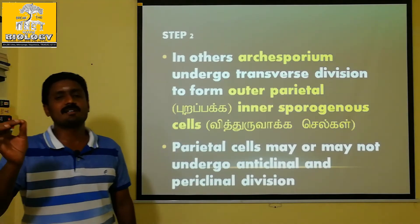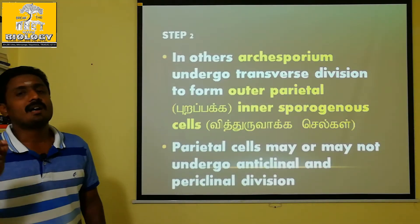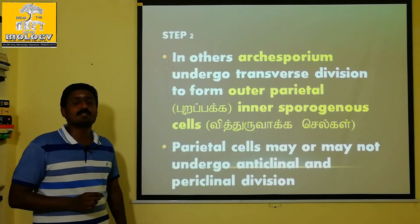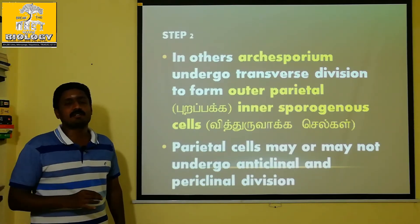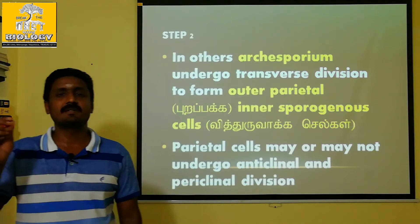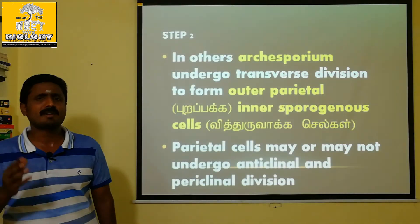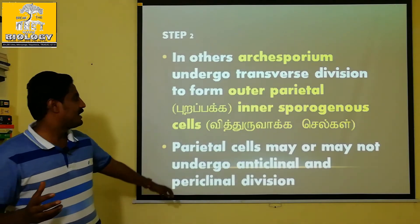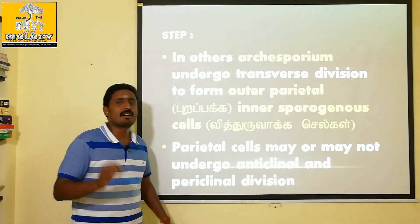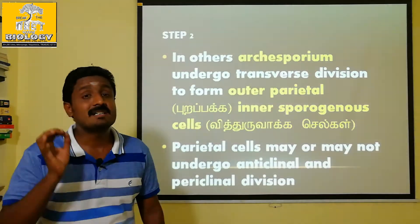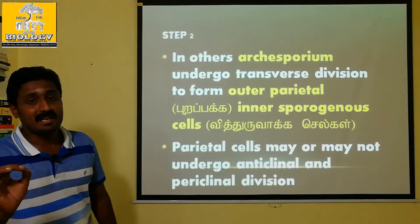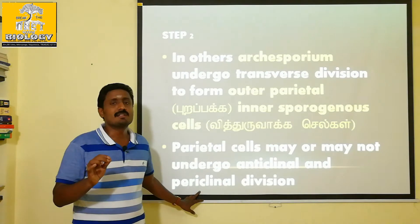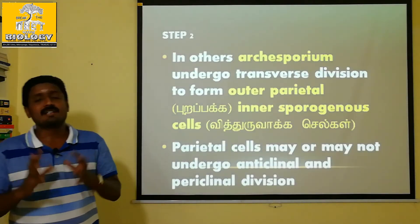Parietal cells produce the wall layers. Parietal cells divide by anticlinal and periclinal divisions. In the second step, the parietal cells are produced.